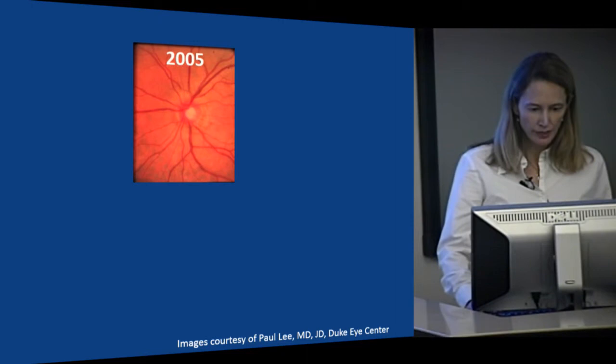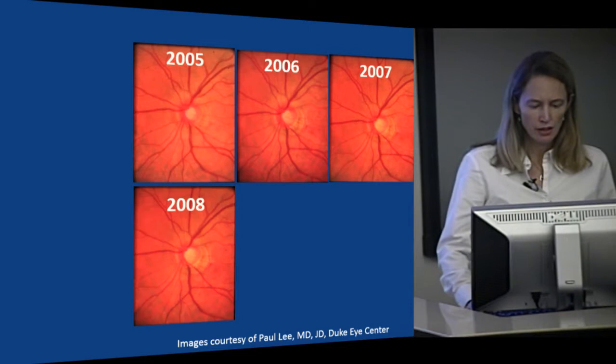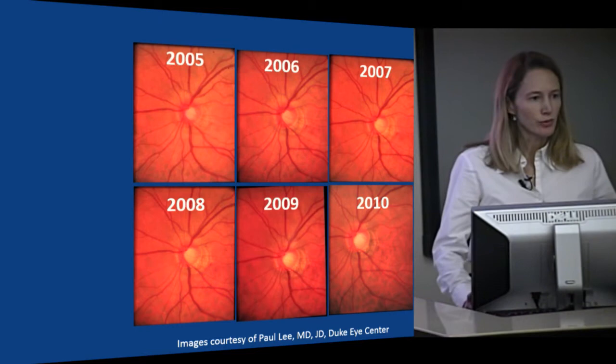Why is that? It's a difficult disease to diagnose — it's still a clinical diagnosis and very slowly progressive. I'll illustrate that with photos of the optic nerve head of a patient taken from 2005 through 2010. Optic nerves can look unusual just the way they were made, and that's okay, but if they're changing over time, that gives us insight that glaucoma might be progressing.